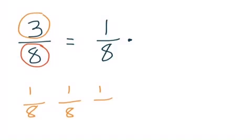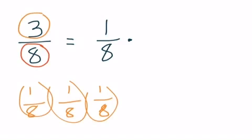So how many times did I do one eighth? I did it one, two, three. So three times one eighth, or one eighth times three, will give me three eighths.